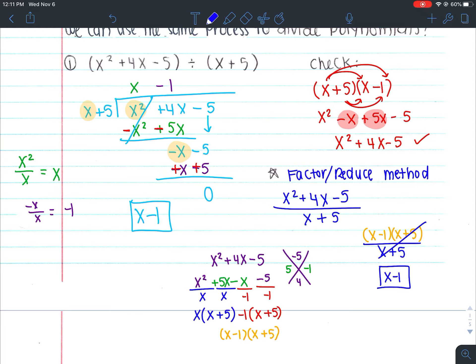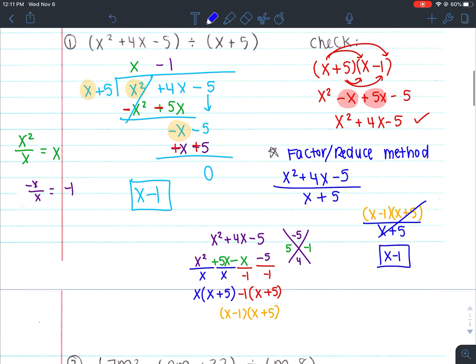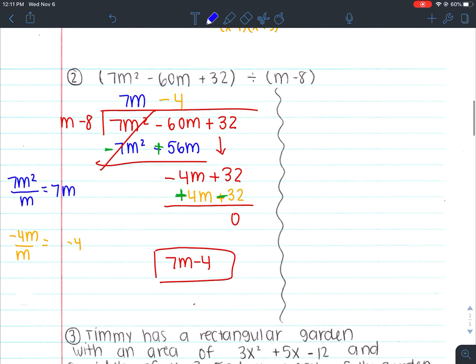Okay, so there are two ways to do this. And sometimes people think that the factoring and reducing method is the easier way because they're used to factoring and that's fine. I wouldn't necessarily call it the shorter way just because it depends on your definition of short, right? From my definition, I would think long division is a little bit shorter. But again, some people like the factoring and reducing method. So you do need to know how to do both methods.